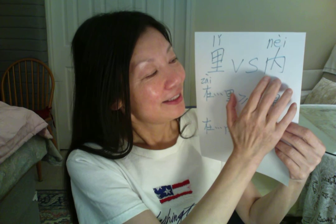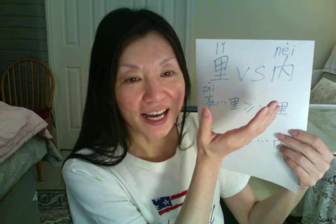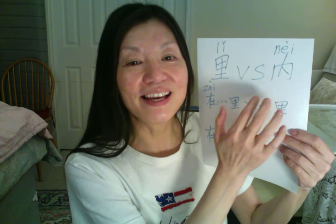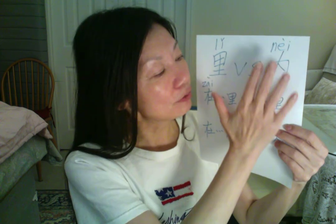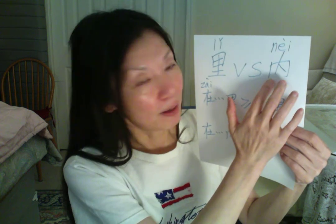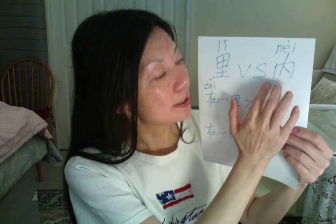For example: 在教室里 (in the classroom). Now 内 — it is formal, and the second meaning is talking about time, things you cannot see (看不见的东西). For example: 一个星期内, 一个月内, 一年内, 五分钟内, 十分钟内 — because time we cannot see, we prefer to use 内.